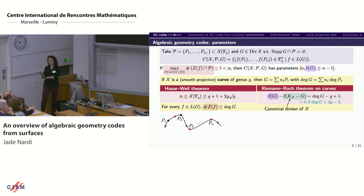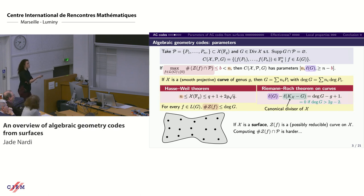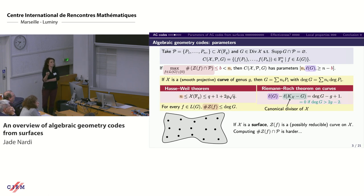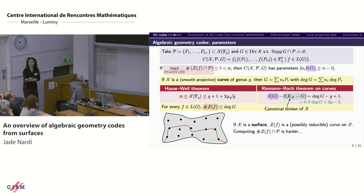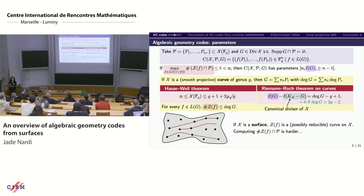We know plenty about AG codes on curves, but working on surfaces gives a variety with more points, so potentially longer codes. However, computing the minimum distance is harder because the zero locus is now a curve — possibly reducible — making it much harder to count the intersection points in the zero locus.